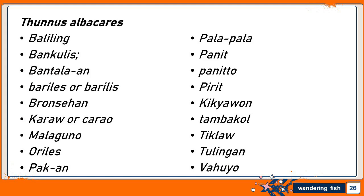Yellowfin tuna are locally known as: Baliling, Banculis, Banalan, Barils or Barriles, Brontian, Kara or Corao, Malaguno, Borals, Pocon, Polapala, Panat, Panato, Pirat, Kikiawan, Dambikol, Tikla, Tulangan, and Vauyo.